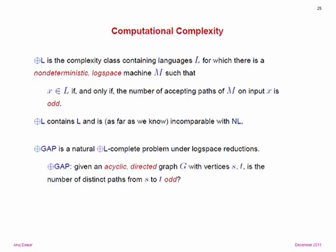A natural parity L-complete problem is parity gap: given an acyclic directed graph G with vertices S and T, is the number of distinct paths from S to T odd? We can express parity gap in fixed-point with counting. You take the matrix for the graph G, think of it as a matrix over the two-element field, raise it to the power of the size of the matrix, and look at the entry from S to T — it tells you whether the number of paths is even or odd.